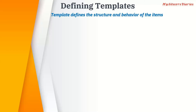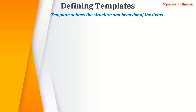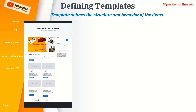For our exercise, let's take an example — assume we have to build this page. As a Sitecore architect or developer, the first thing we do is break this page into modules following the Helix principle. So if I break down this page, you will have a header, a title, a hero banner, a feature information part, a feature CTA, and a footer.